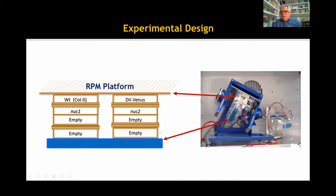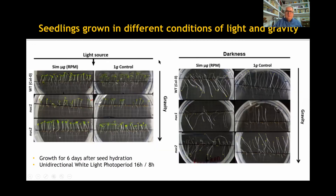Now, we have used the random positioning machine (RPM), a reliable facility for microgravity simulation on Earth, to test the effects of a white light photoperiod. Several genotypes and lines of Arabidopsis were used: namely the wild type, two mutants of the two genes of the nuclear protein nucleolin, and a reporter line for the detection of auxin in situ. They were incubated in the RPM, grown under photoperiod, and analyzed for several parameters relevant for the status of meristematic competence. Seedlings were grown on the photoperiod in the RPM or in the 1G control, and grown in darkness also in simulated microgravity or in 1G.